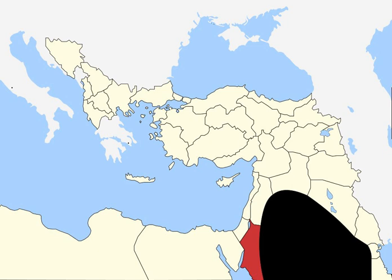1920, in March, Faisal proclaimed himself king of the Kingdom of Syria. 1920, in April, the San Remo Conference formally outlines the proposed French mandate for Syria and Lebanon and British mandate for Palestine, along the lines of the Sykes-Picot Agreement. The border between British and French territory would carve northern Transjordan from the Vilayat of Syria; however, no direct mention of Transjordan was made at the conference.